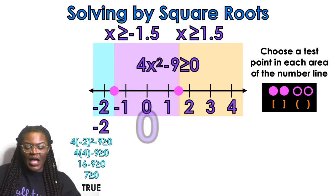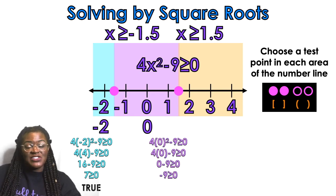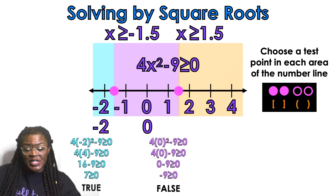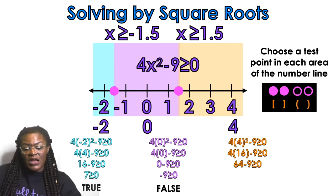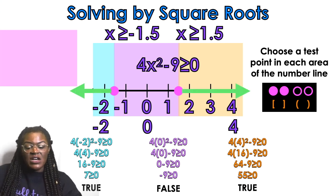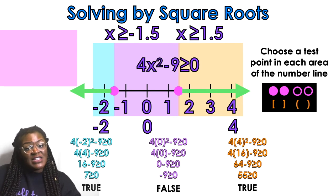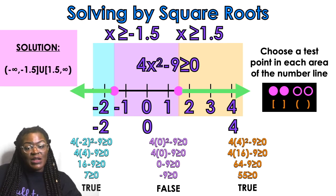From the purple area, I'm going to choose 0. Anytime there's a 0 in your test area, pick the 0. When I plug that in, I get negative 9 is greater than 0 — false. So the purple area is not part of our solution. For the orange area, I'll pick 4, and I get 55 is greater than or equal to 0 — that is true. So my solution is negative infinity to negative 1.5, bracket, union with positive 1.5 to positive infinity, bracket — brackets because there's an equal to in my symbol. Infinities always get parentheses because they're not a fixed value.